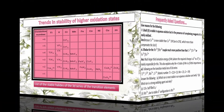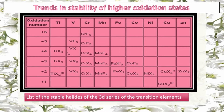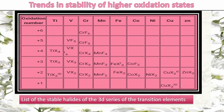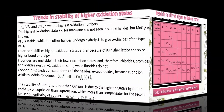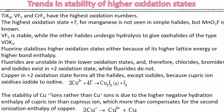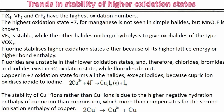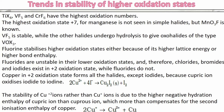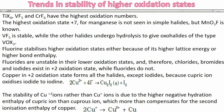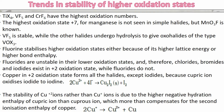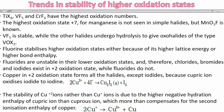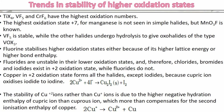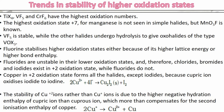Now we will discuss trends in the stability of higher oxidation states. In the tabular column you can see the stable halides of the 3d series. Among halides, only fluoride is capable of forming metal fluorides in which metals are in their highest oxidation state. This is because of their higher lattice enthalpy, as in cobalt trifluoride, or higher bond dissociation enthalpy, as in vanadium pentafluoride and chromium hexafluoride.